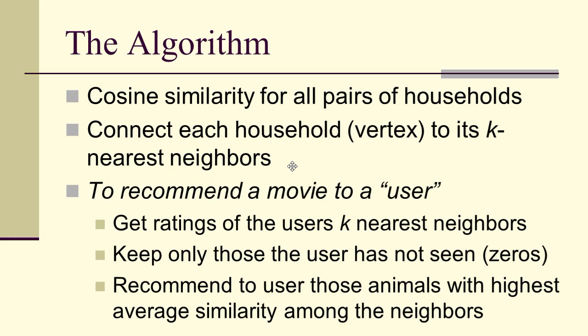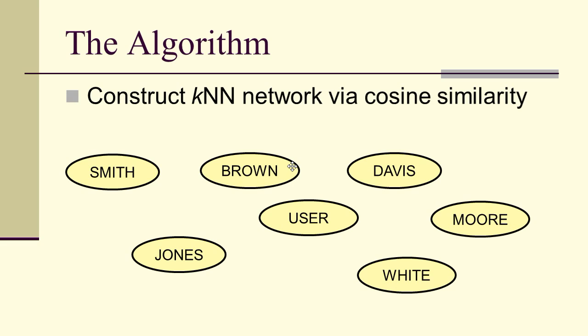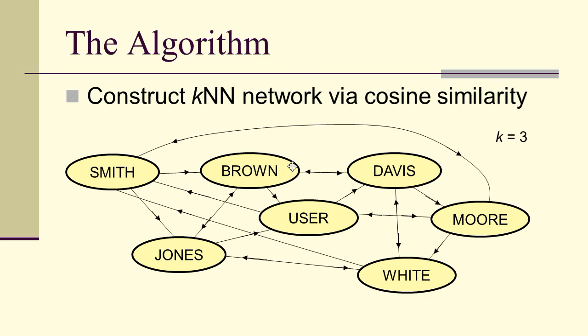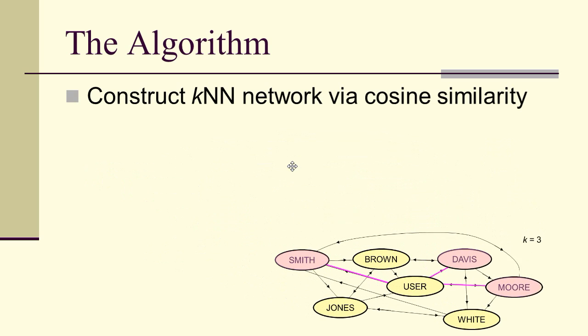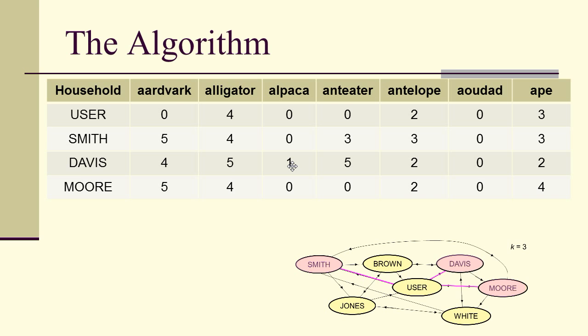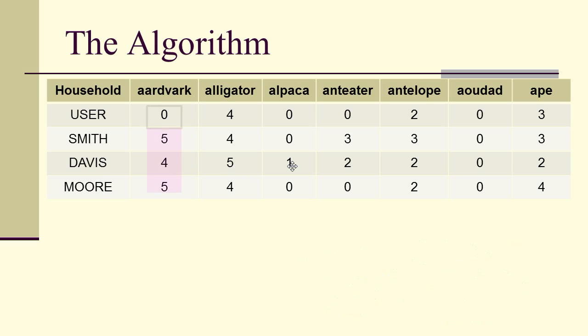To recommend an exhibit to a user, get the ratings of the user's k nearest neighbors, keep only those the user has not seen — where the user has zeros — then look at their neighbors and recommend the animals with the highest average rating among neighbors for exhibits the user hasn't seen. We construct the k-nearest-neighbor network via cosine similarity, using k=3 here to illustrate. Looking at the out-connections gives us Smith, Davis, and Moore as the user's nearest neighbors.